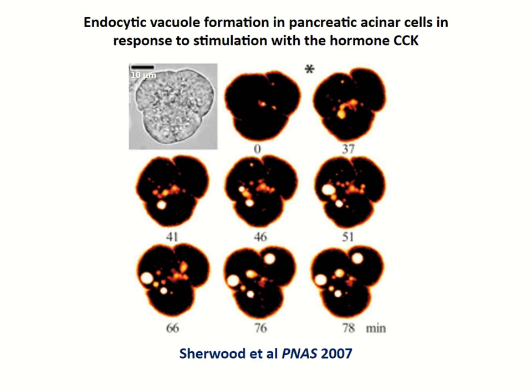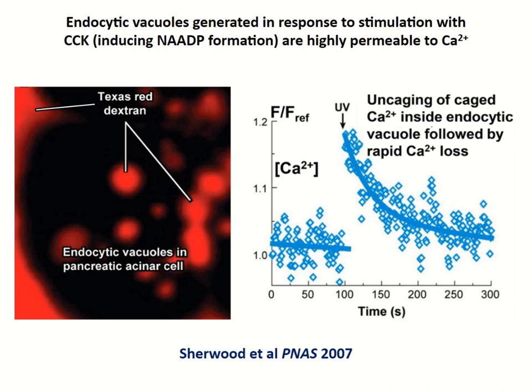Another type of endosome we have been quite interested in are the so-called endocytic vacuoles, which have similar properties to endosomes but are nevertheless somewhat different. They are quite large structures. We can induce their formation by stimulation with a hormone called cholecystokinin, referred to as CCK. Some of these vacuoles become very large — almost five microns in diameter — and because they are so large, we can use them for various interesting experiments. In this experiment, cells were immersed in a solution containing Texas red dextran and caged calcium plus a fluorescent calcium indicator, allowing uncaging by ultraviolet laser light.